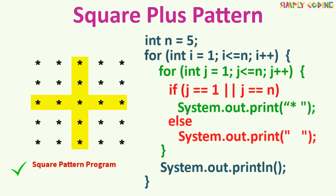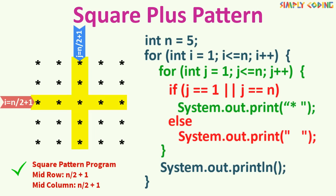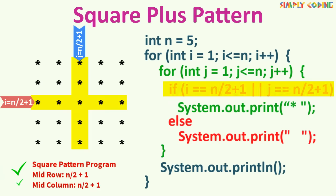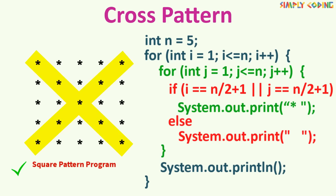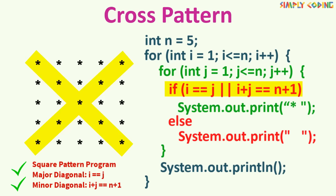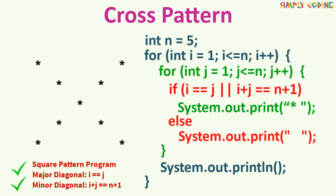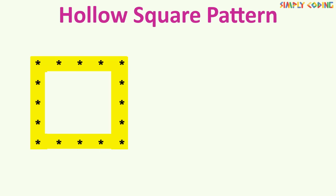For a plus pattern, we print the center row and center column, which is n divided by 2 plus 1. We change the if condition to i equal to n divided by 2 plus 1 or j equal to n divided by 2 plus 1. Running this gives the plus pattern. For a cross pattern, we print the diagonals: the major diagonal has i equal to j, and the minor diagonal has i plus j equal to n plus 1. We change the if condition accordingly, and running it gives the cross pattern.